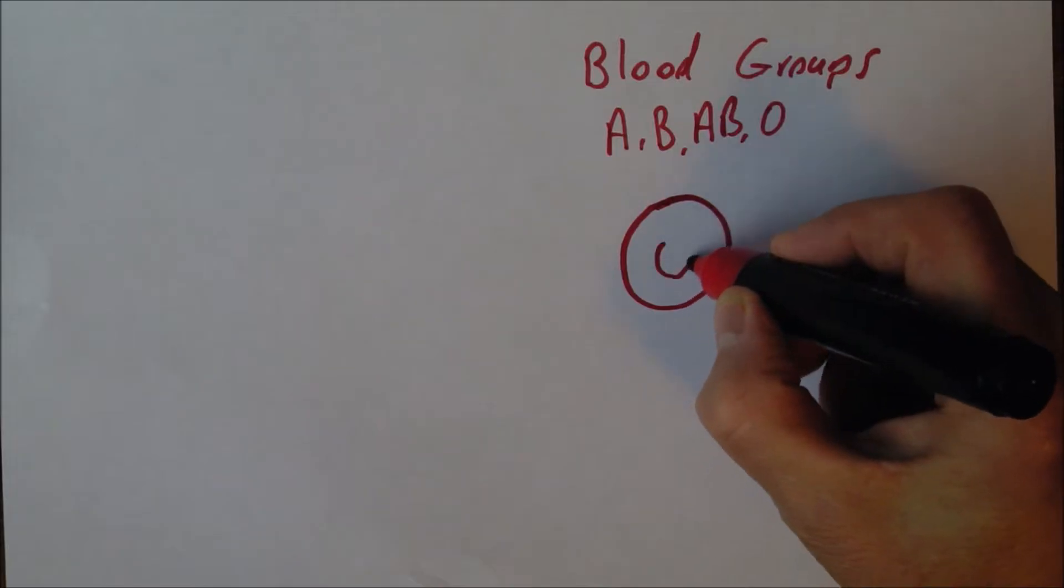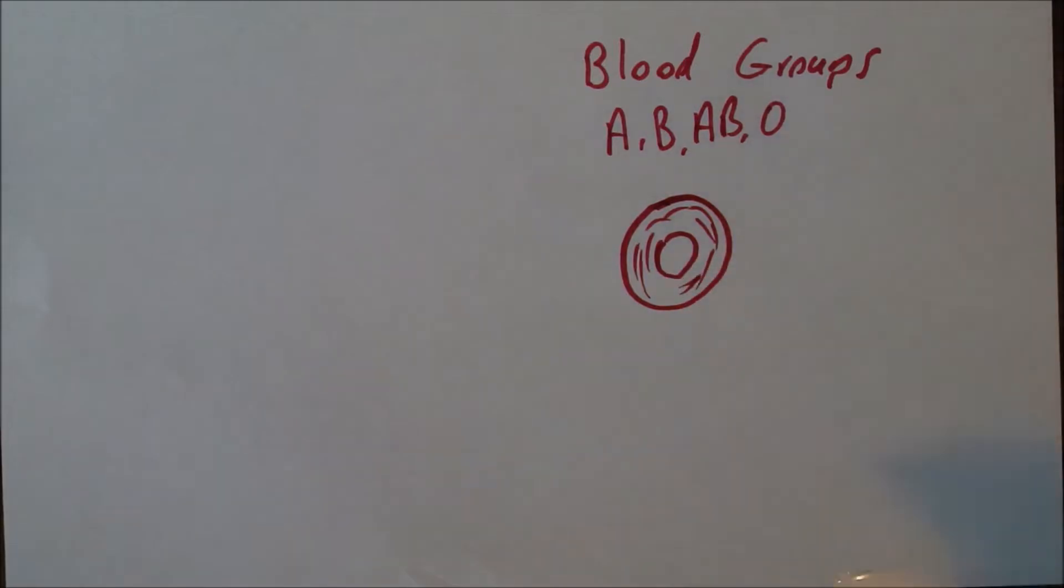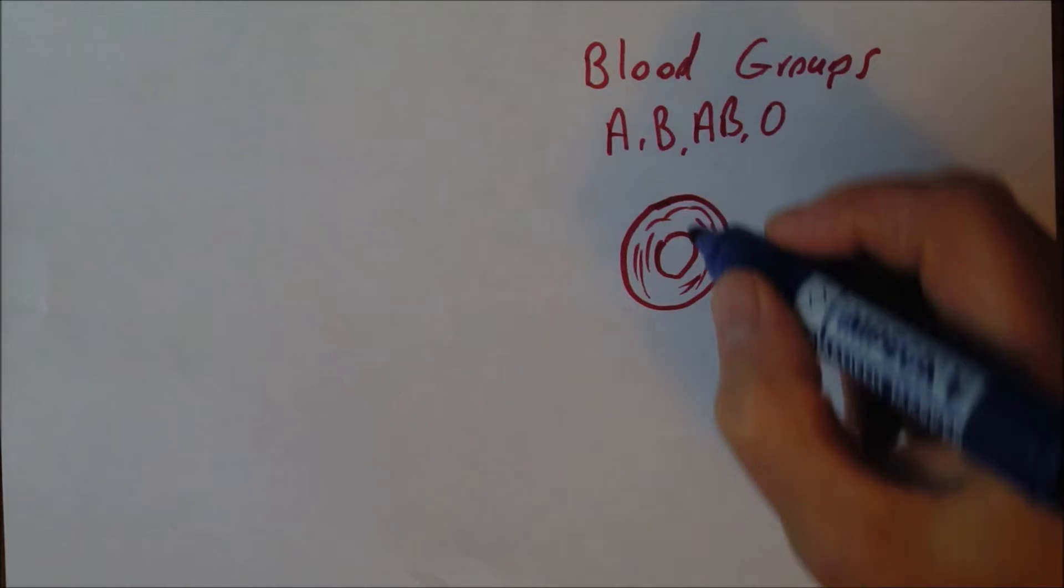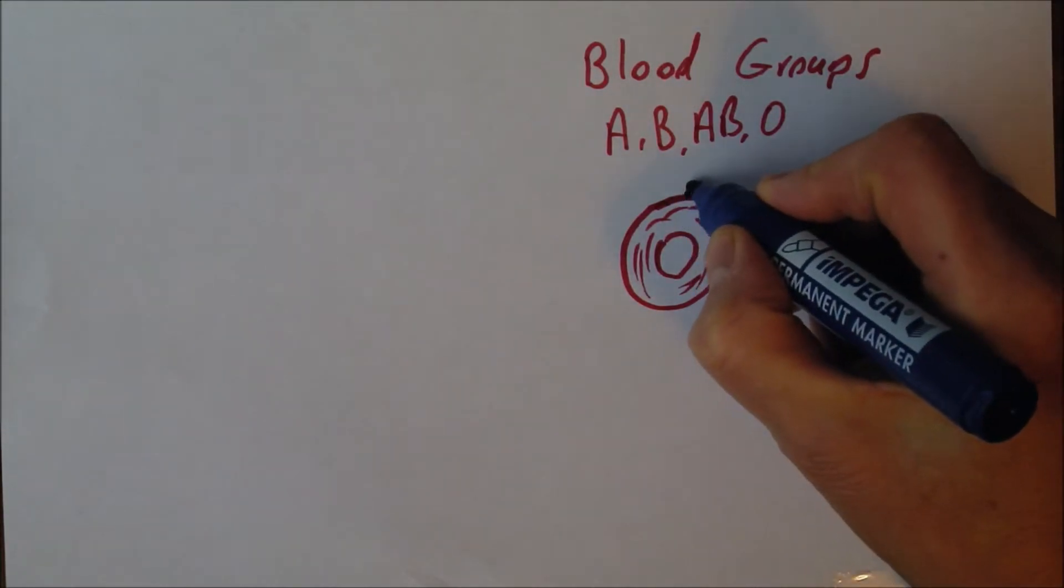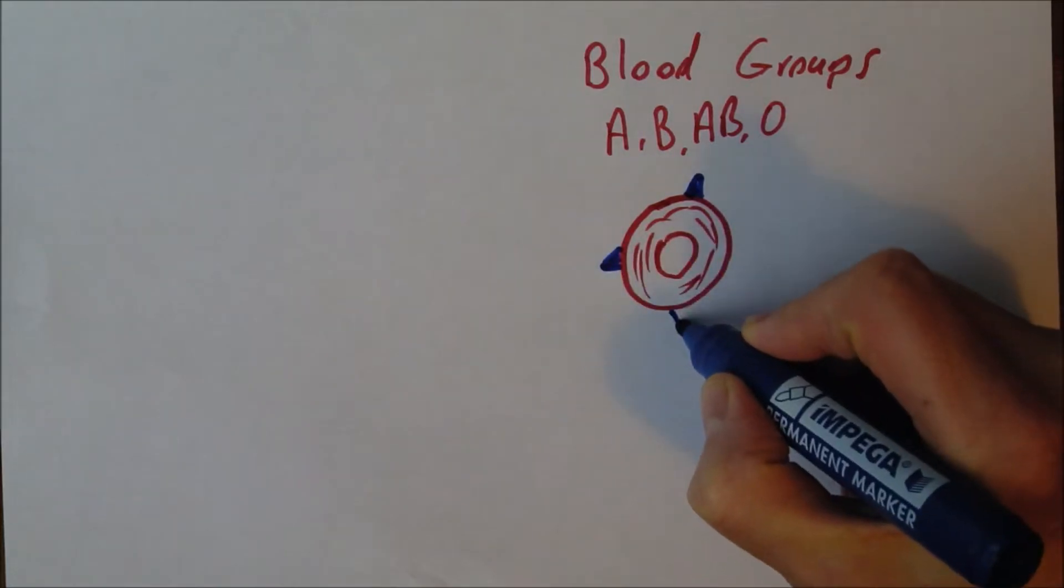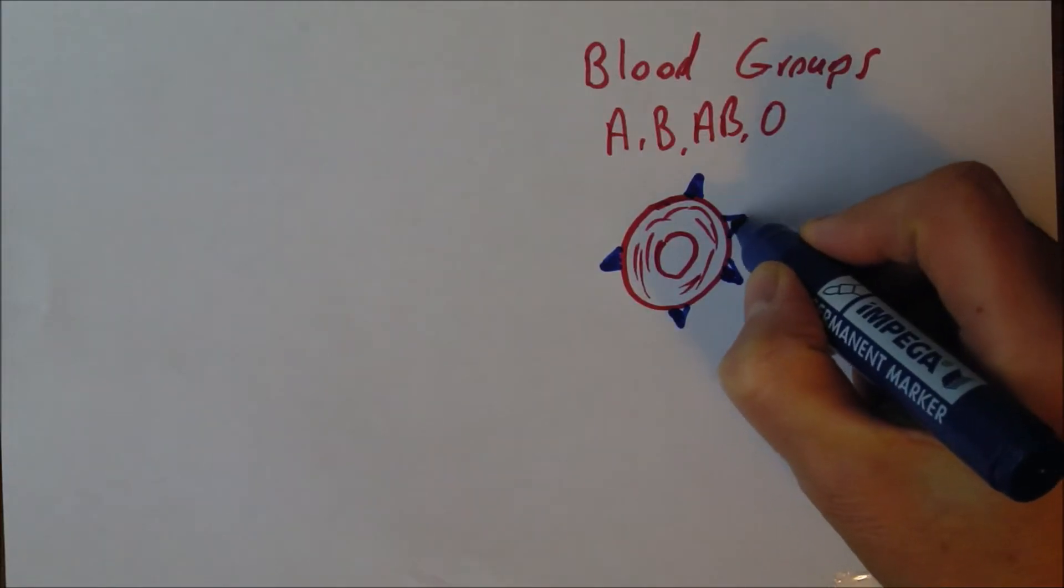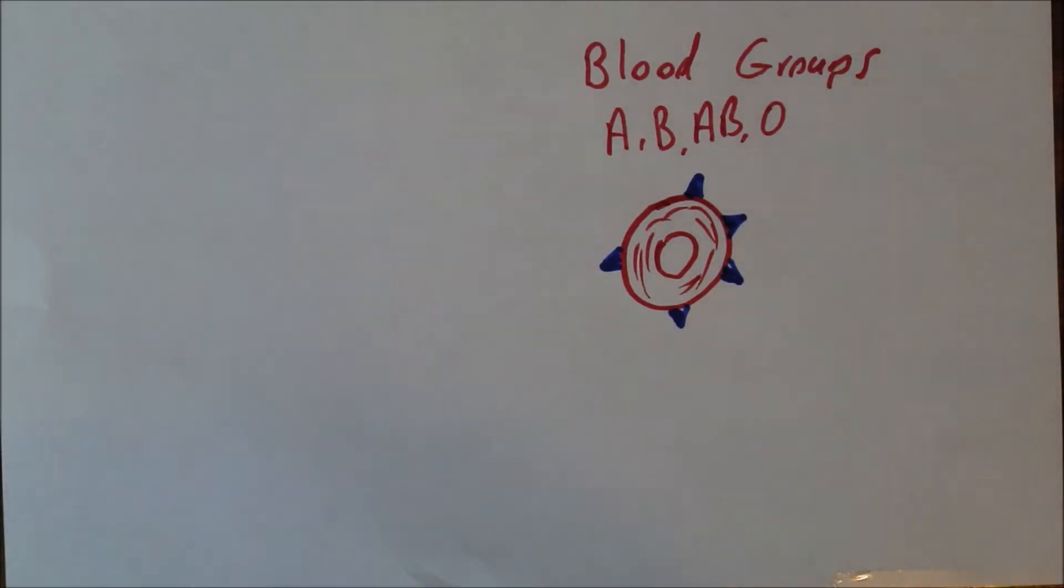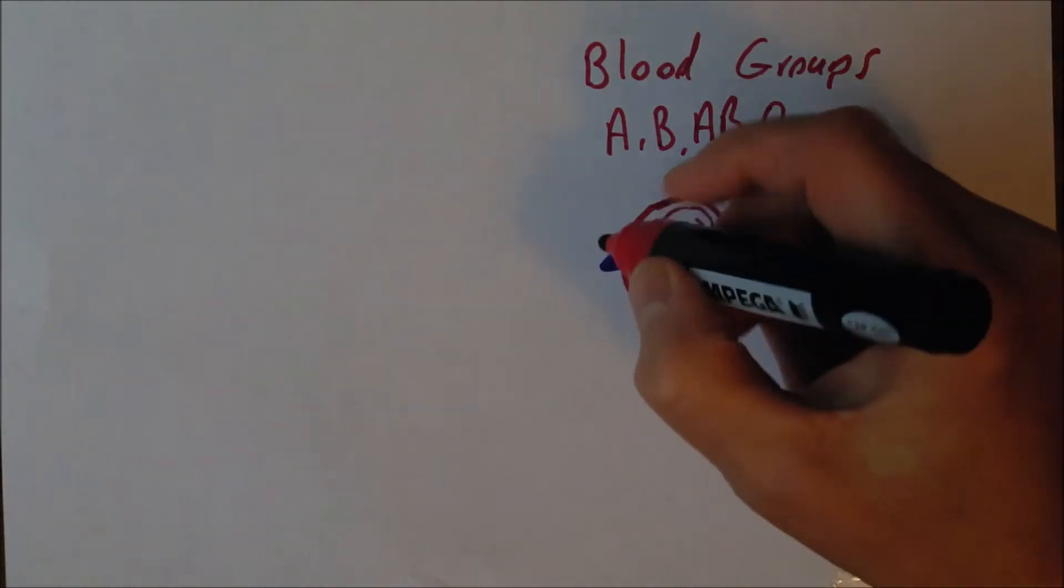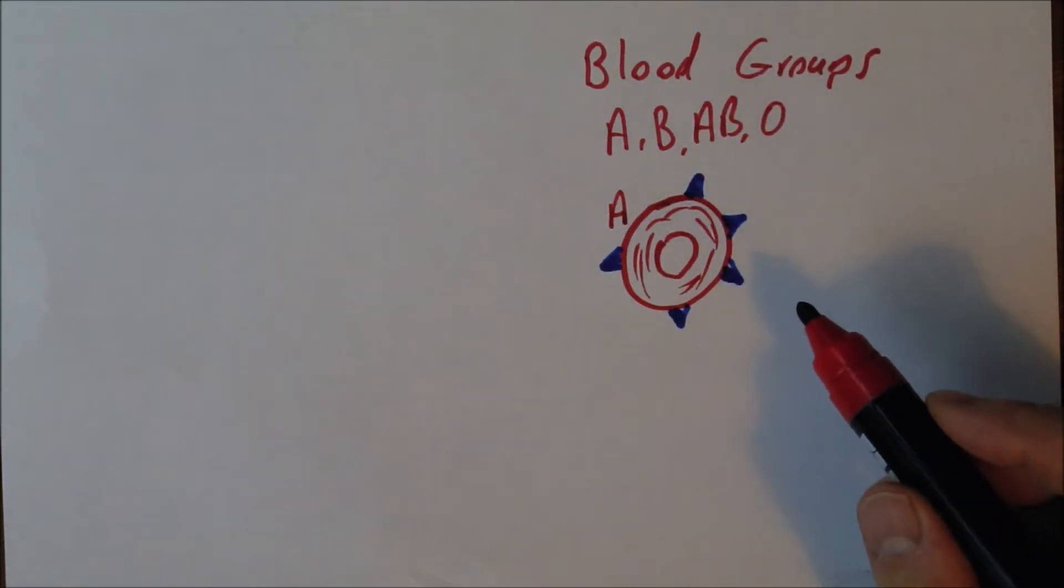So here we have our red cell, the erythrocyte, darker on the outside because it's thicker on the outside. The blood groups are actually antigens on the surface of the cell. These triangular shaped antigens represent group A. They are particular shaped proteins on the surface of the cell, and the key thing for the purposes of this talk is that these are genetically determined.